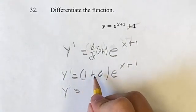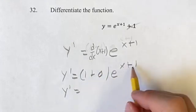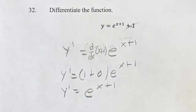Simplifying this, 1 plus 0 is just 1, 1 times anything is just itself. So the derivative is just e to the x plus 1.